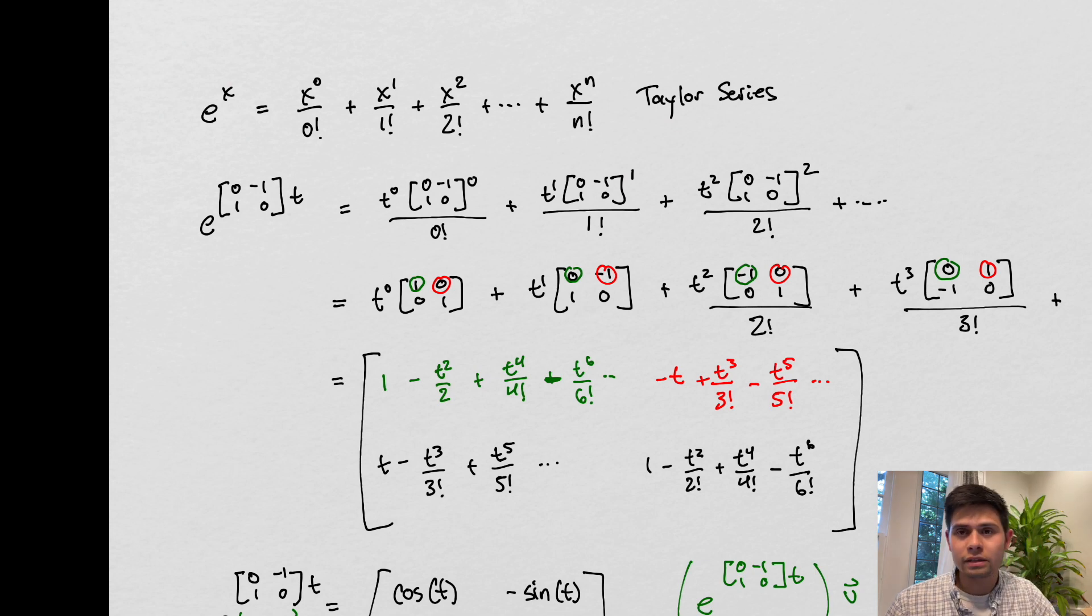But we're going to use this Taylor series, which is a representation of what e^x looks like. So e^x is a sum of the powers of x divided by these constants, one factorial, two factorial, three factorial, and so on until we get up to n factorial.